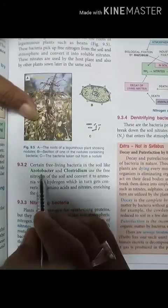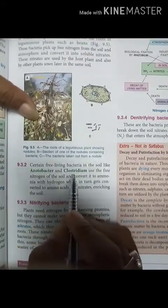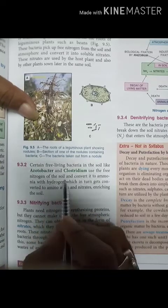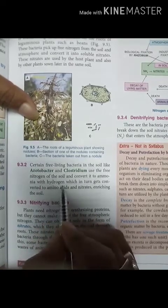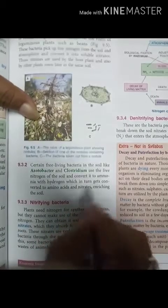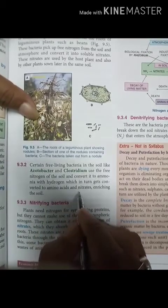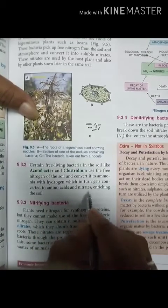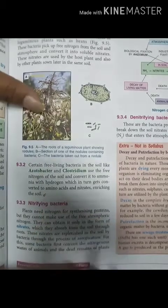Certain free-living bacteria in the soil, like Azobacter and Clostridium, use the free nitrogen of the soil and convert it into ammonia with hydrogen, which in turn gets converted to amino acids and nitrates, enriching the soil.